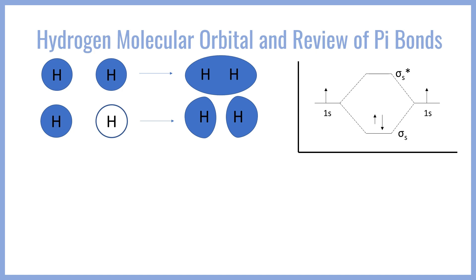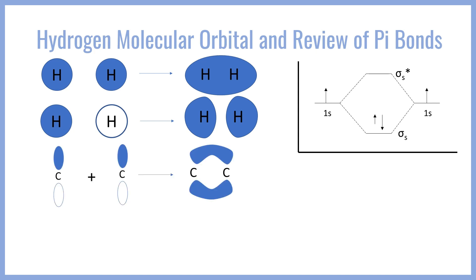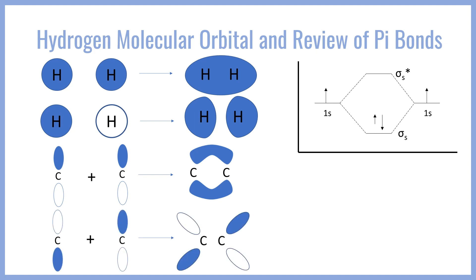We can also think about how pi bonds form. The p orbitals in carbon atoms can undergo a parallel overlap where they can interact constructively to give the bonding pi orbital. Or they can also interact destructively if the wave function signs are opposite to give the antibonding orbital.